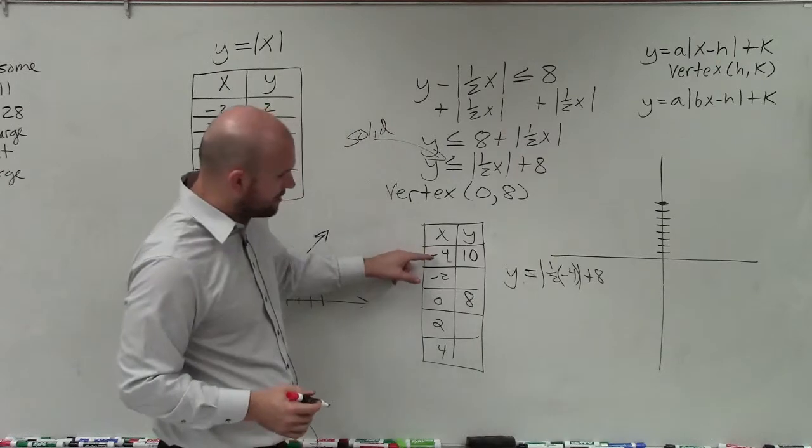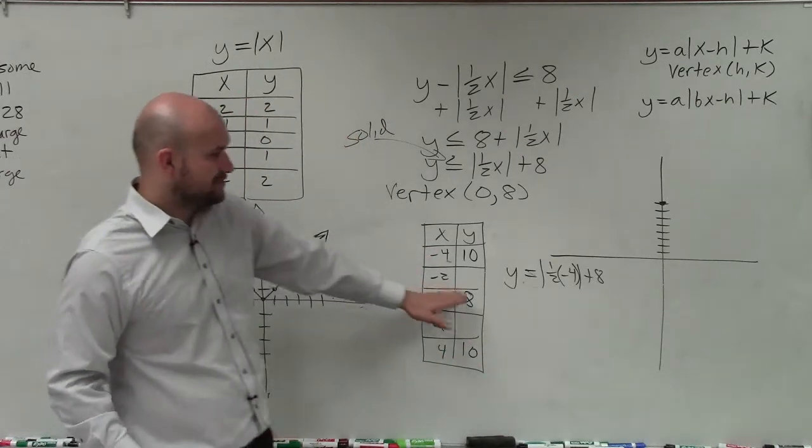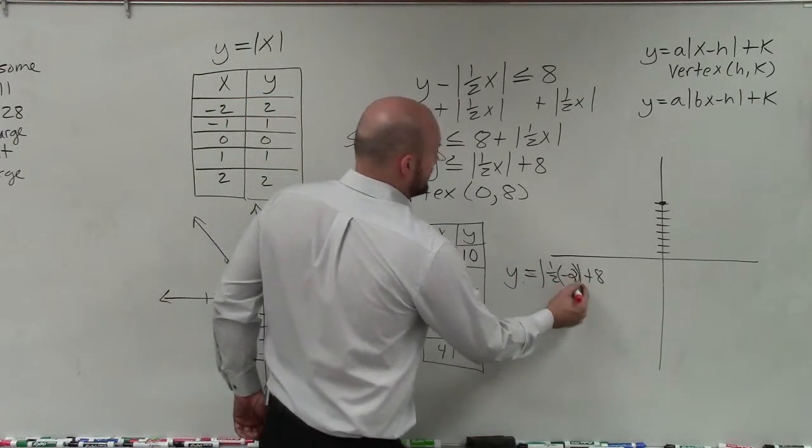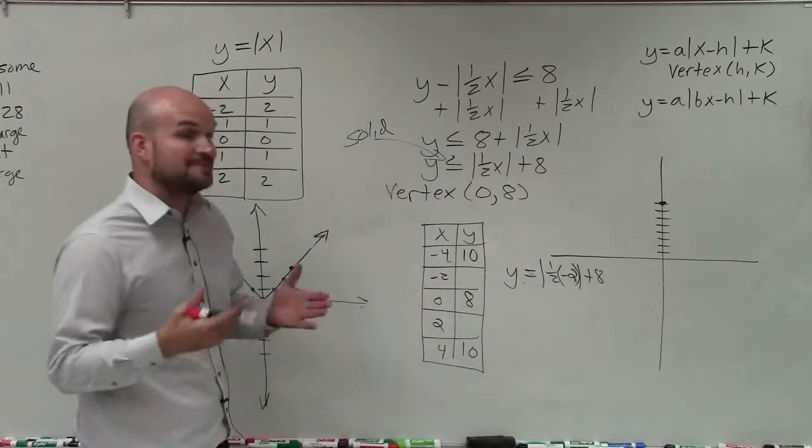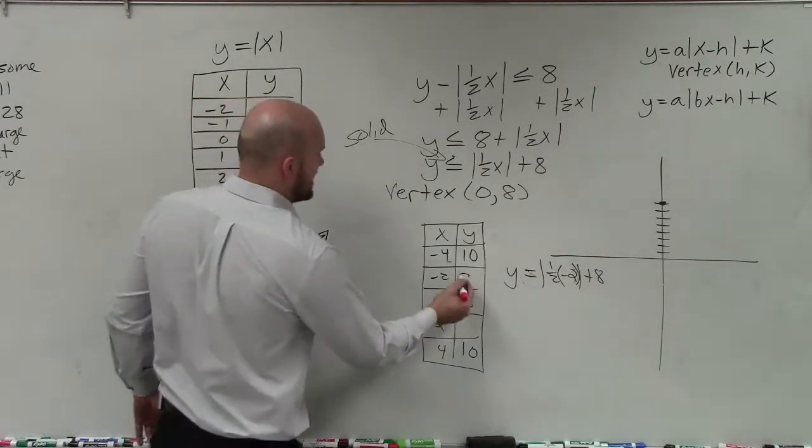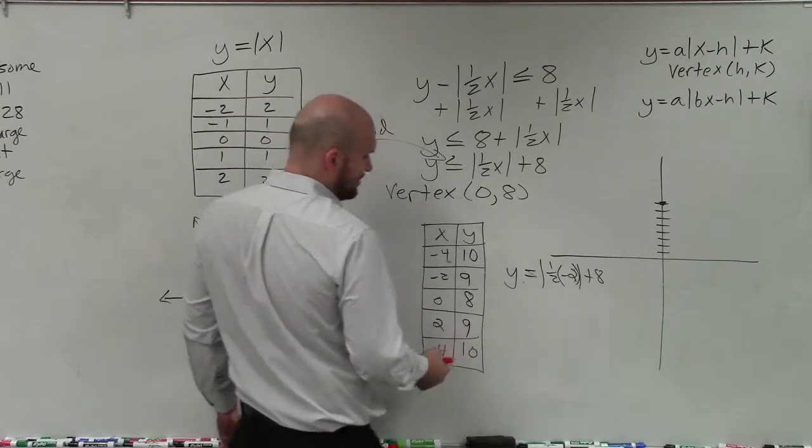So if negative 4 is 10, that means positive 4 is going to be 10. Now let's do negative 2. 1½ times negative 2 is negative 1, absolute value of negative 1 is positive 1, positive 1 plus 8 is 9. So if negative 2 is 9, that means positive 2 is 9. So let's go and plot these points.